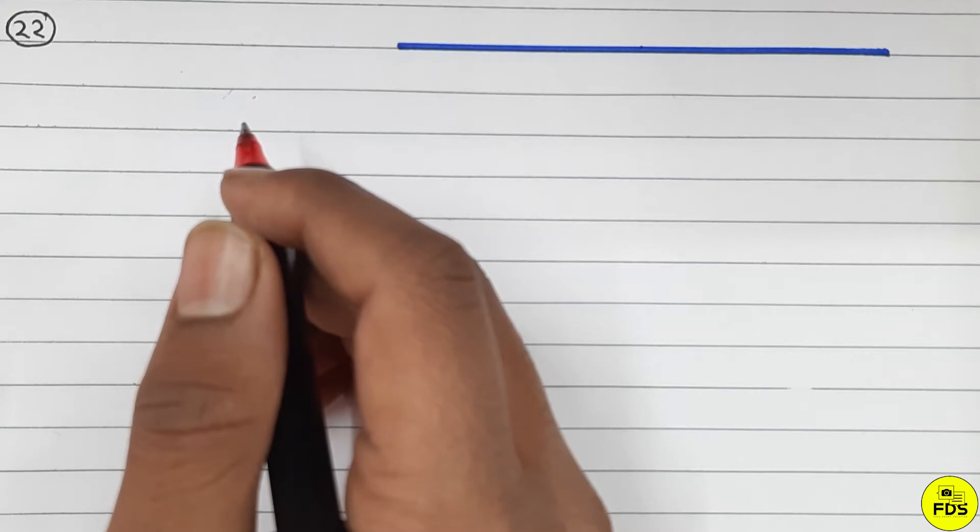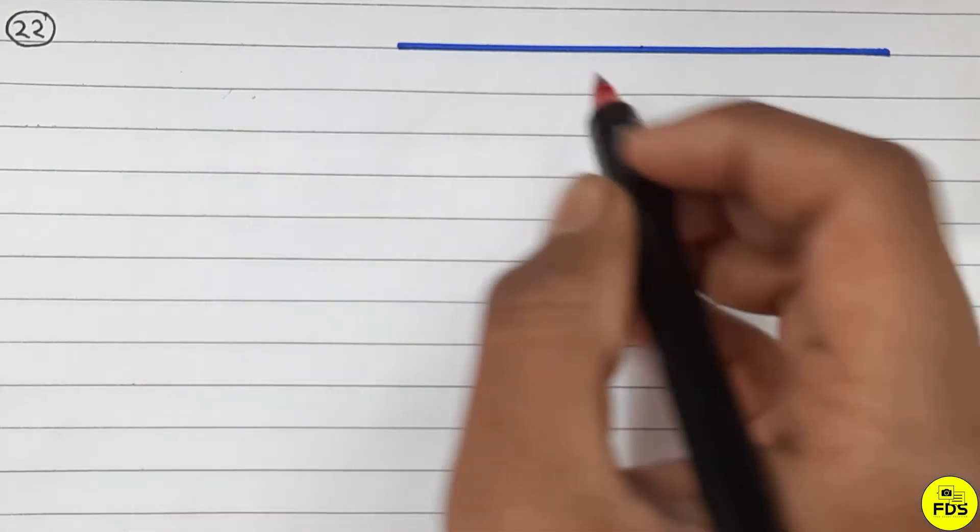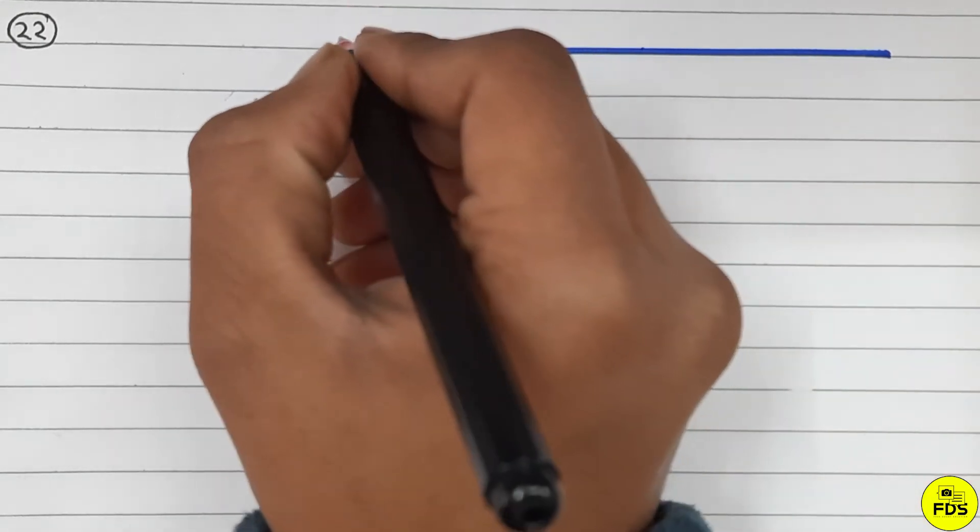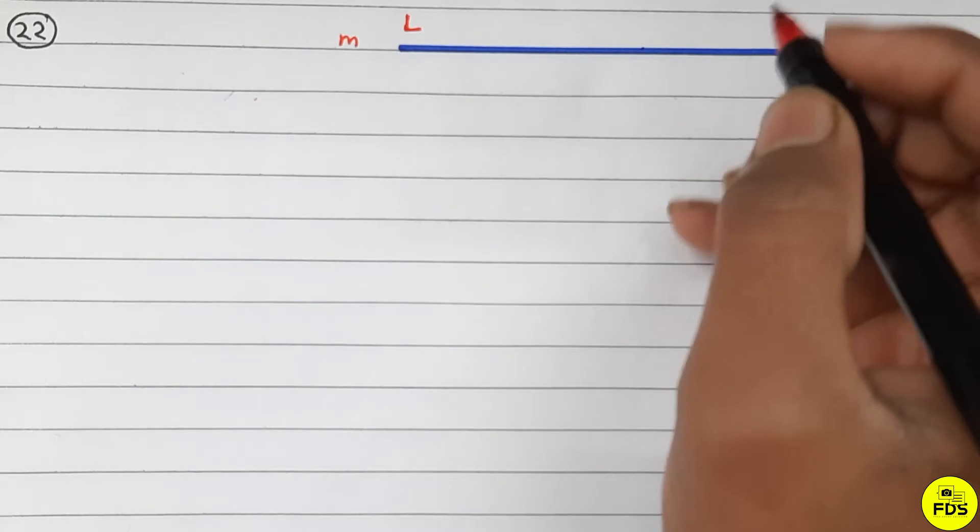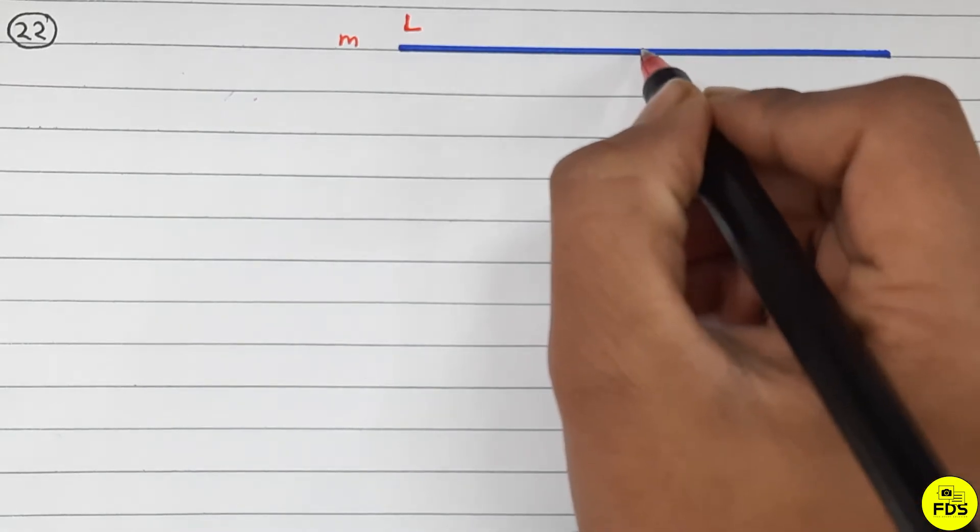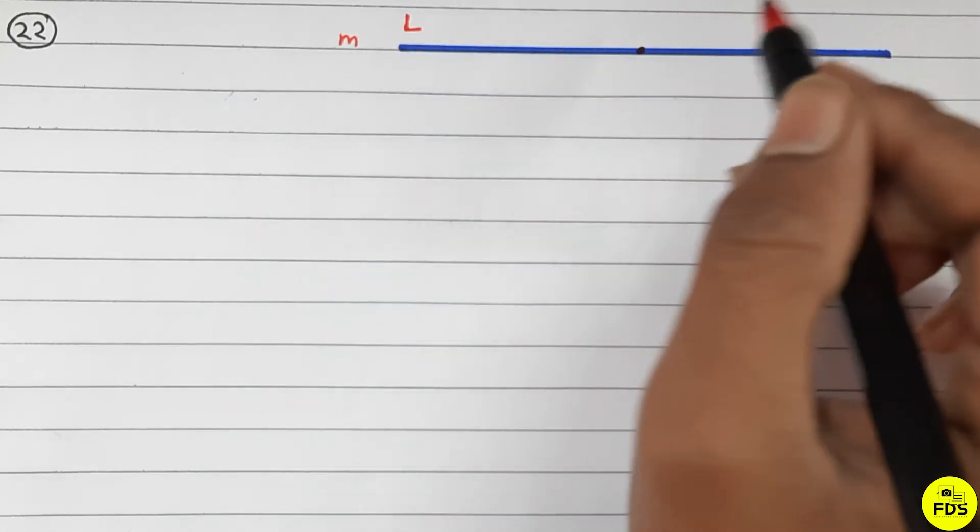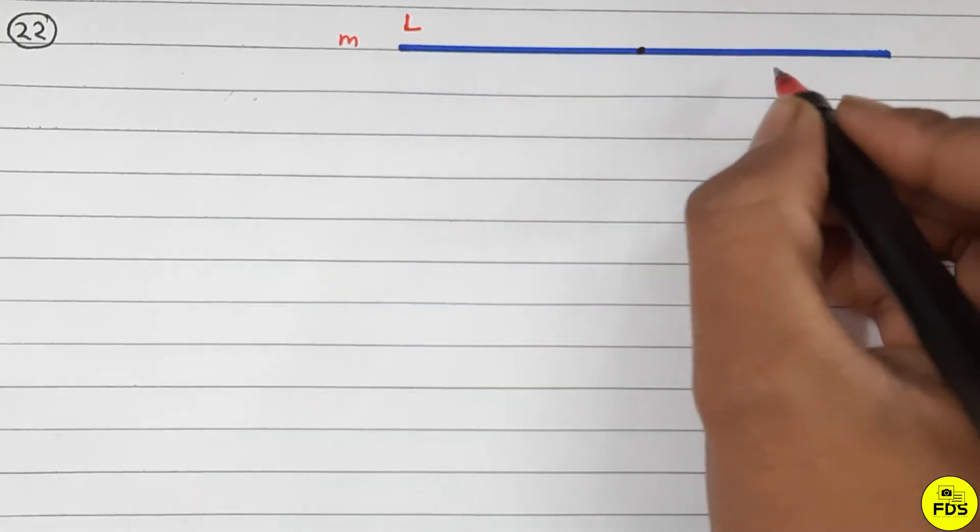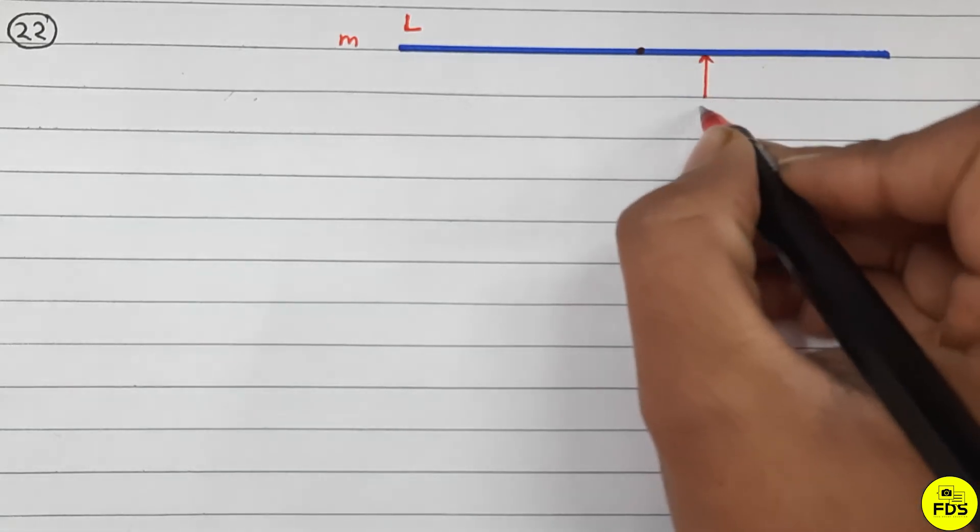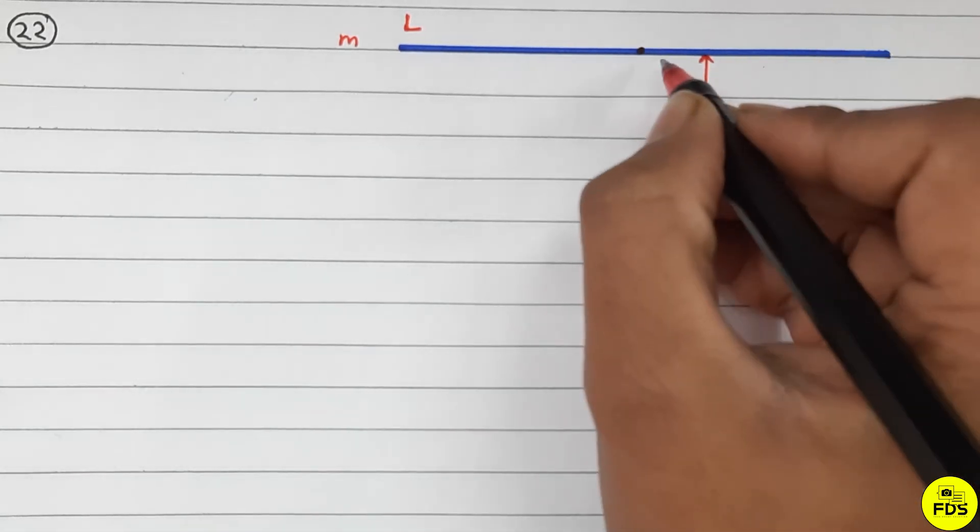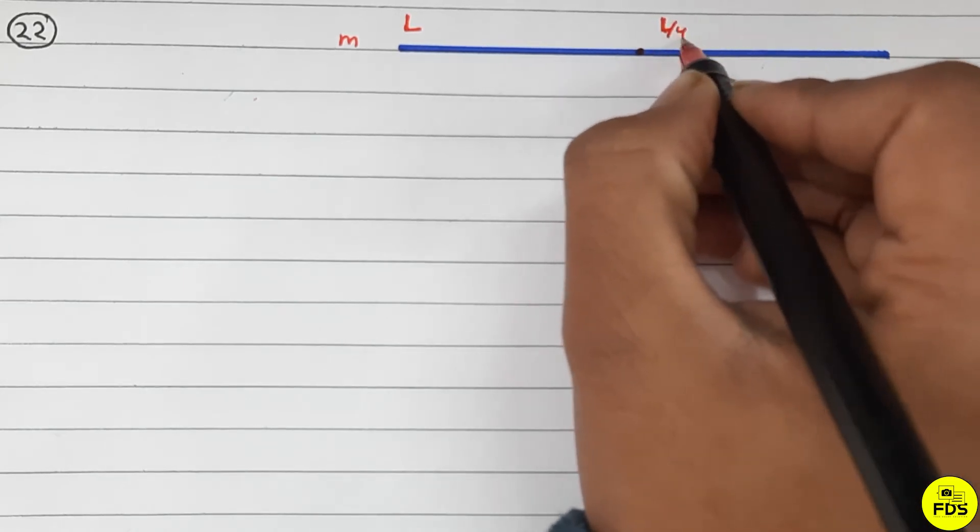This is a rod which has mass small m and length capital L. This is the center, free to rotate. A force is applied at one-fourth length distance from the center. The distance from center to the point where the force is located.